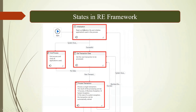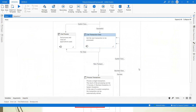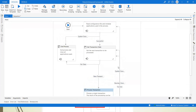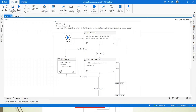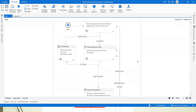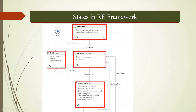The four states are: initialization, get transaction, process transaction, and end process. As a developer, you may sometimes need to add or remove states. For example, if a client requires that when a process transaction encounters an exception it goes directly to end process, you simply draw a connection between those two states. Most of the time the default framework works, but you may need to customize it.